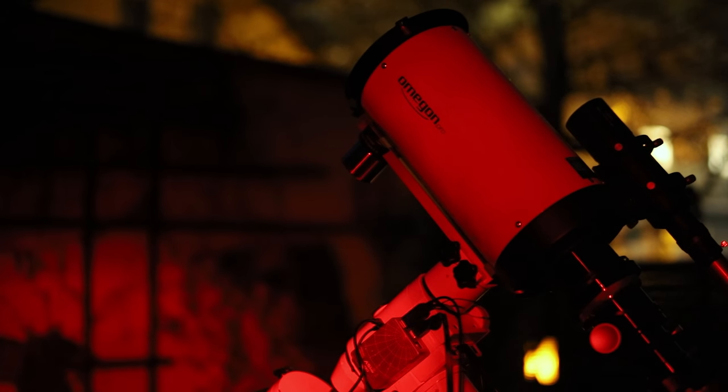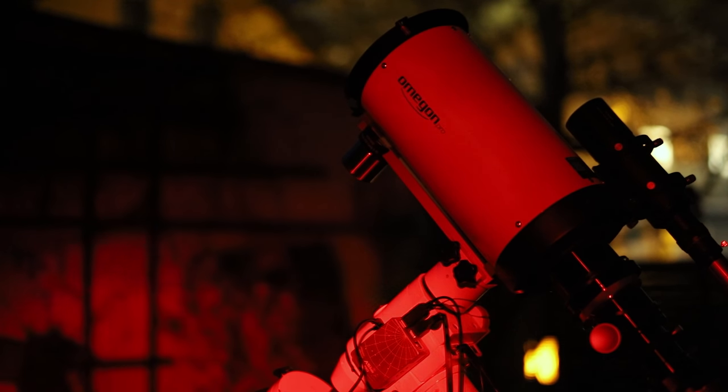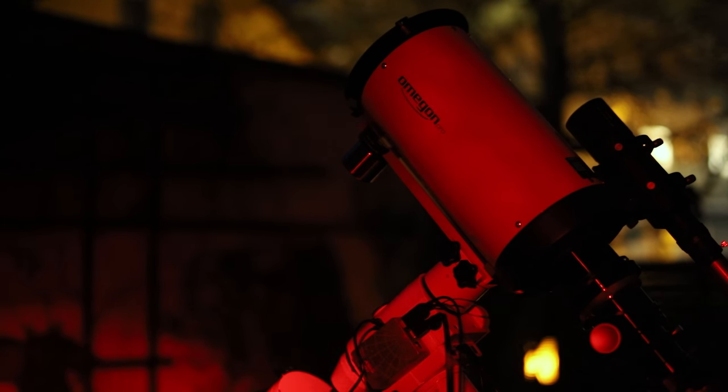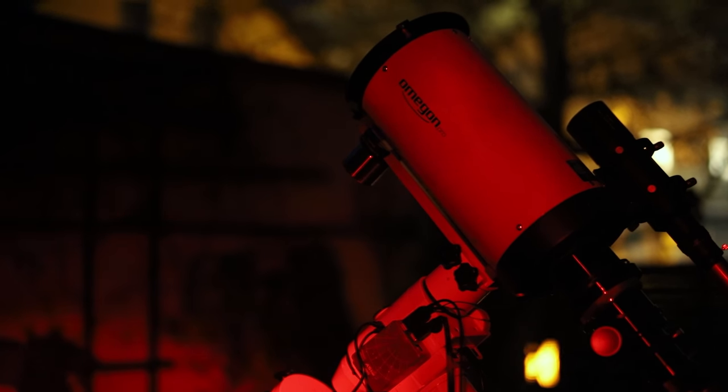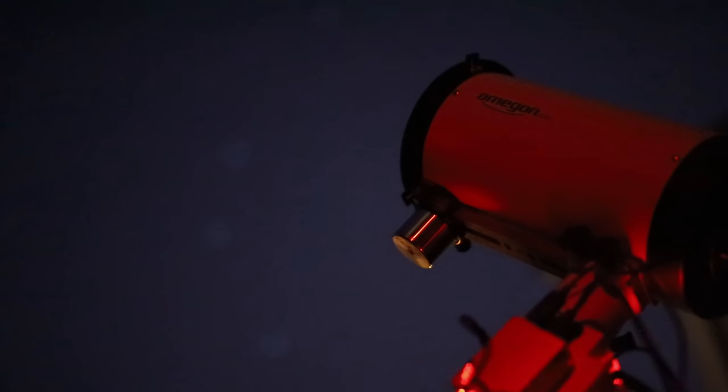And now with some red light, it's dark enough, I need to start focusing and setting up, getting out the tablet and the ASIAIR. Here you can see the telescope and in the back the Constellation Big Dipper, well, at least some defocused stars.